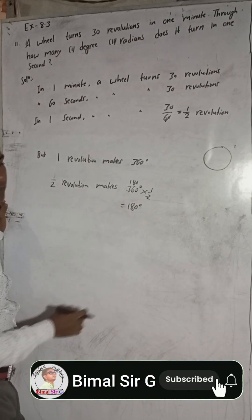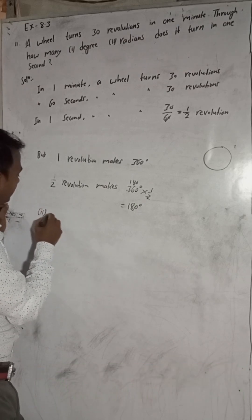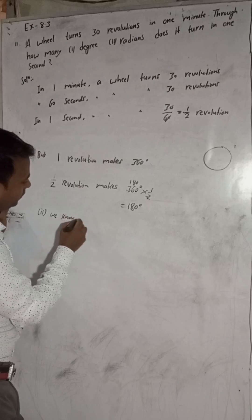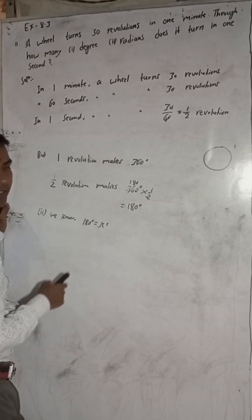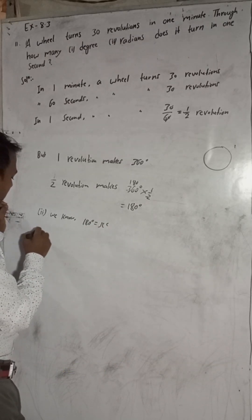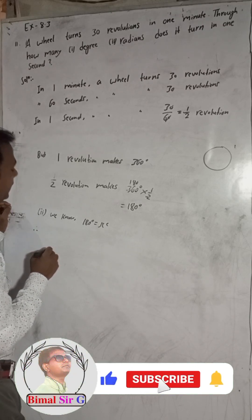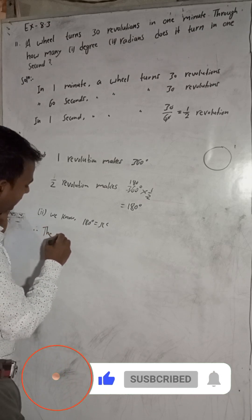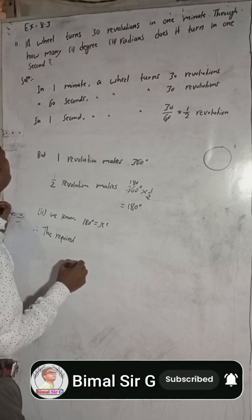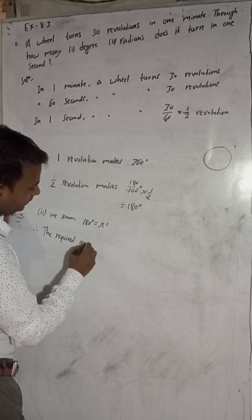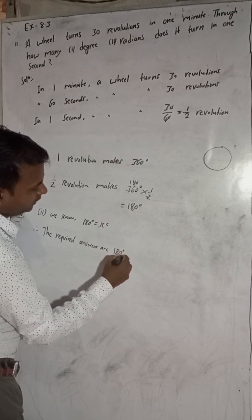And now number two, the radians. We know 180 degrees equals pi radians, so this will be pi radians. Therefore, the required answers are 180 degrees.